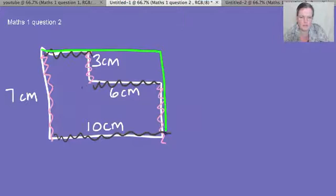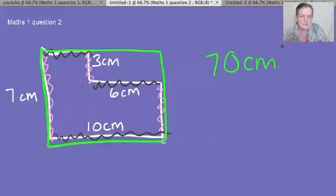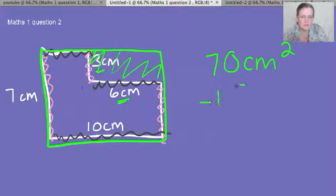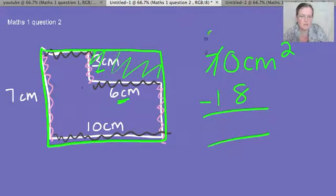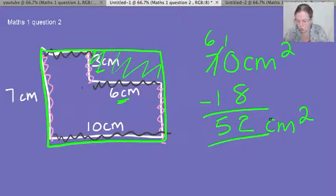So the whole rectangle would be seven times 10 which is 70 centimeters squared. Take away, now we're going to take away this bit which is 6 times 3 which is 18. Naught take away you can't do, borrow. 10 take away 8 is 2, 6 take away 1 is 5, so it's 52 centimeters squared.